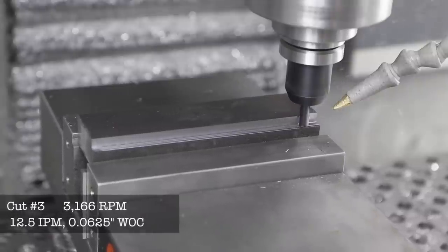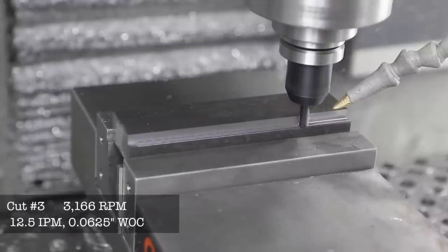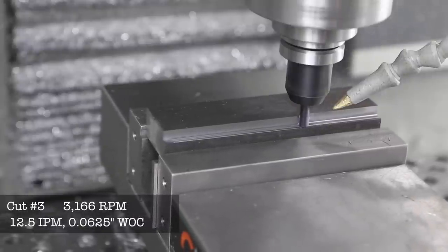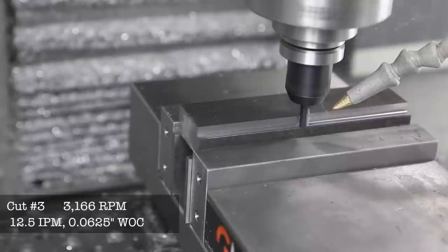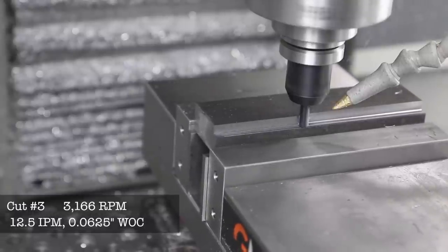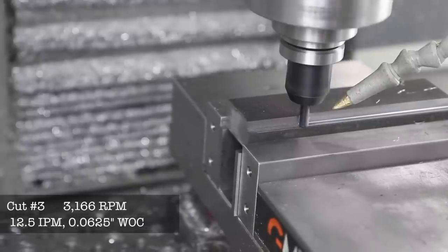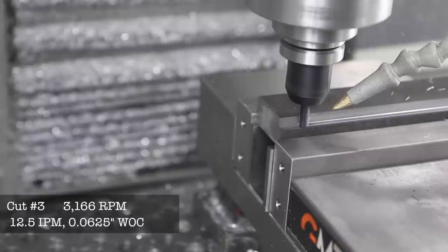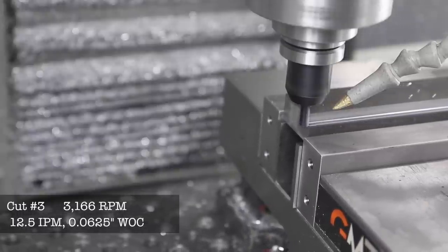This is cut number three, and this is the light rough setting in G Wizard. The cut we just took, cut number two, was the finish cut setting. So we're stepping up the increments. I can feel with my hand these chips are also a little bit warmer. It's still a phenomenal result. We're nowhere near anything compromising tool life or chatter or anything bad.